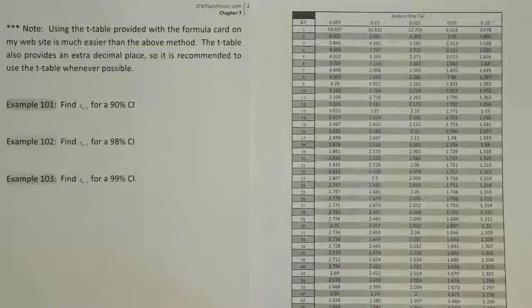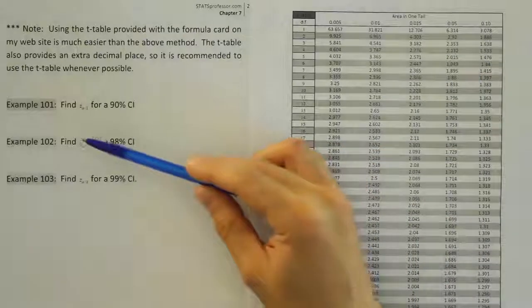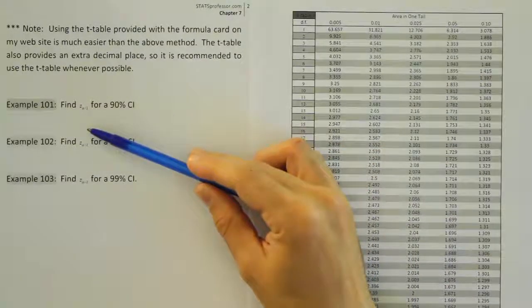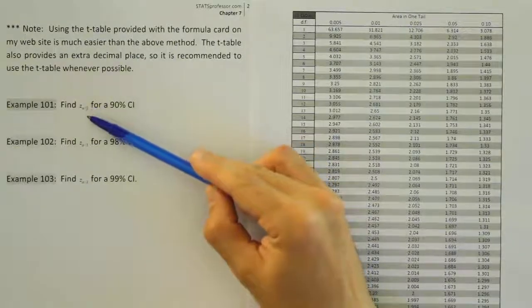So here's the t-table. And it has area in one tail listed. Remember, the z alpha divided by 2 value is a z-score that leaves area in one tail of alpha divided by 2.